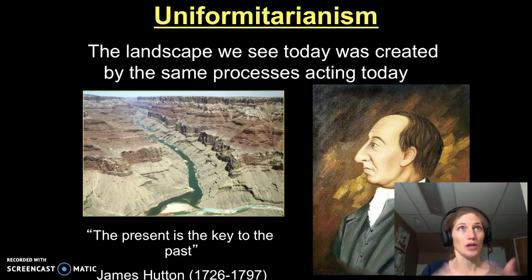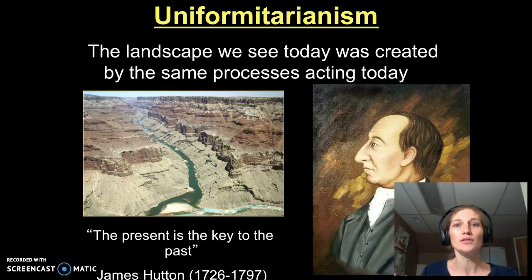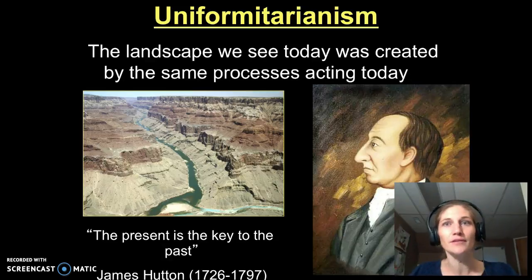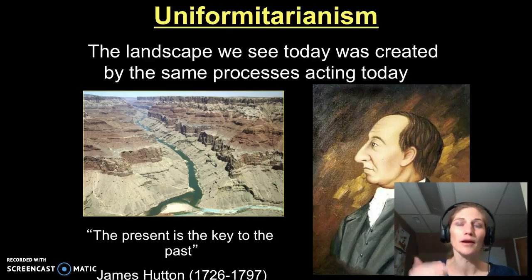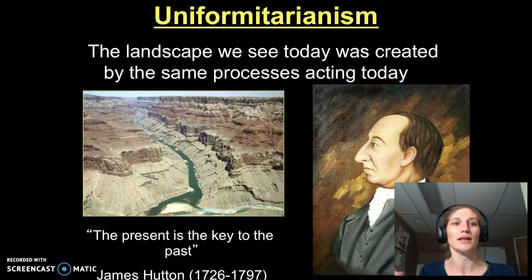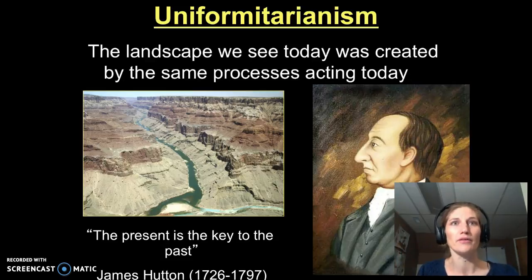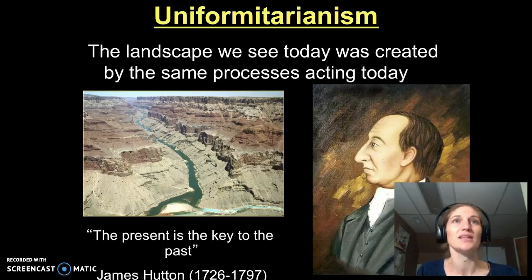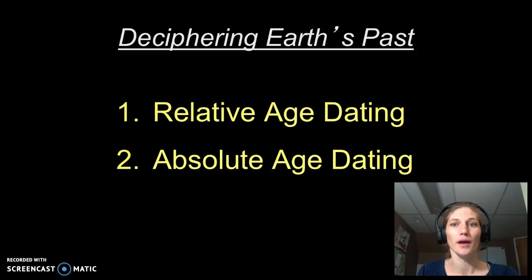Uniformitarianism supports the idea of an old earth, because with time we can see these changes accumulate. What's interesting is that today we do know the land is shaped by these ongoing processes, but we also see more catastrophic events — flooding events that leave deposits, and records of meteorite impacts. Those are still catastrophic events, but uniformitarianism describes everyday changes, and then there are bigger events that can leave more impactful deposits, and we see that in the rock record.